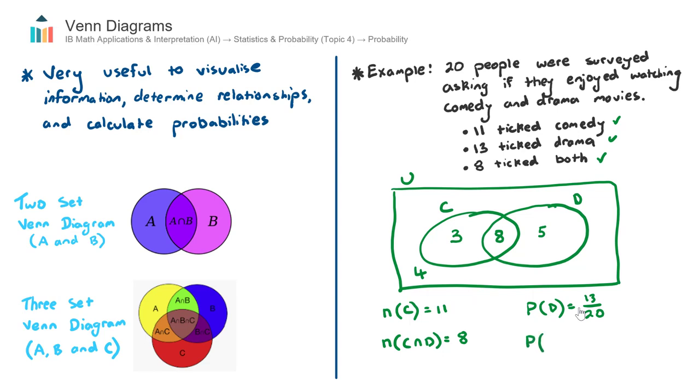Next one, the probability, and this is a little bit harder now, of randomly selecting someone who enjoyed watching drama but not comedy. That's what this set notation here means. Drama and not comedy. This dash here means complement, meaning not comedy. So that will equal, let's have a look at our Venn diagram here. I'm looking for the people who selected that they enjoyed drama but not comedy. And that's this 5 here. So it will be 5 out of 20. And we can simplify that fraction. That will be 1 on 4.